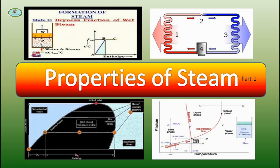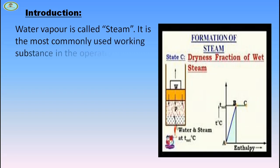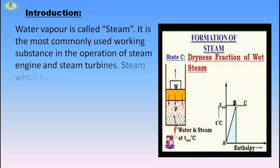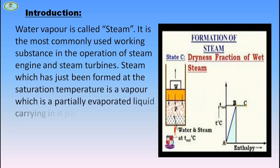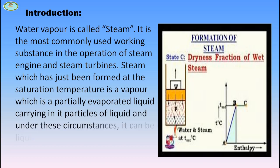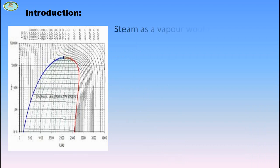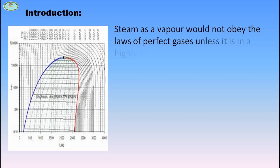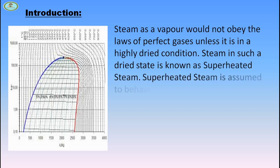Hello friends. In this video we will discuss about properties of steam. A vapor called steam is the most commonly used working substance in the operation of steam engines and steam turbines. Steam which has just been formed at the saturation temperature is a vapor — a partially evaporated liquid carrying particles of liquid — and can be liquefied back into water by minor changes in temperature or pressure. Steam as a vapor would not obey the law of perfect gas unless it is in a highly dried condition. Steam in such a dried state is known as superheated steam.